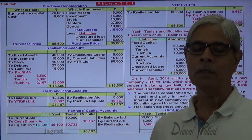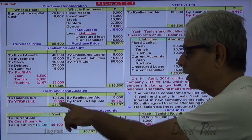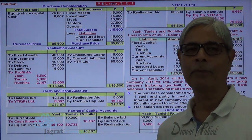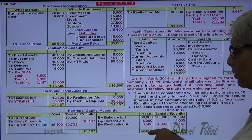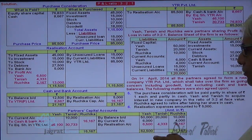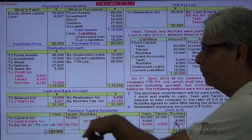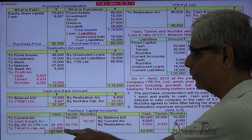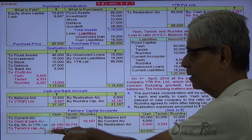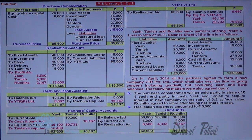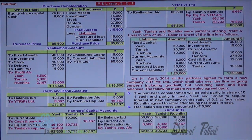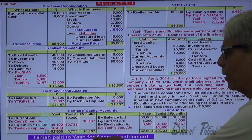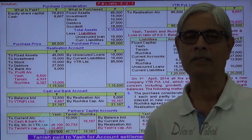This is how the purchase consideration is worked out and distributed. Now I need to close the capital accounts of the remaining two partners, Yash and Tanish. The difference in the capital accounts represents the exchange that should occur between them. Yash is entitled to 62,500 but received only 46,100 in shares, so the remaining 16,400 will be recovered by Yash from Tanish. Closing Tanish's account confirms the same difference of 16,400. So Tanish pays Yash 16,400 for account settlement. This bifurcation of purchase consideration is an important point of this sum.